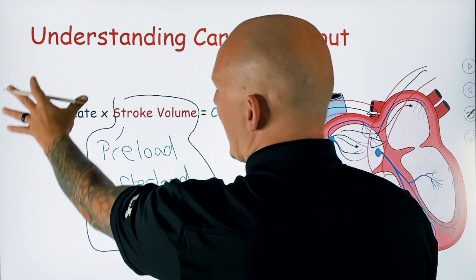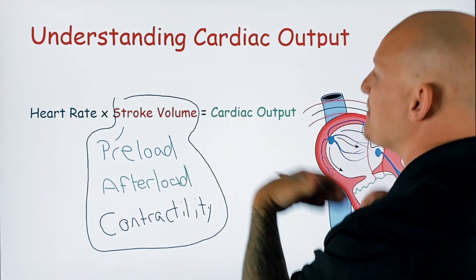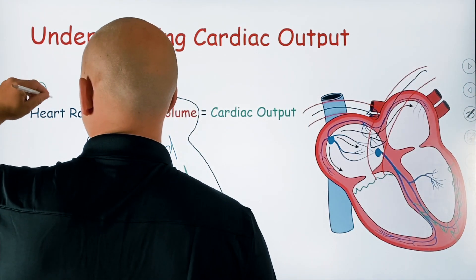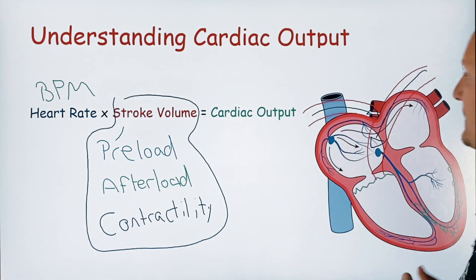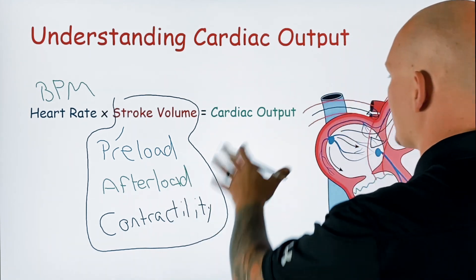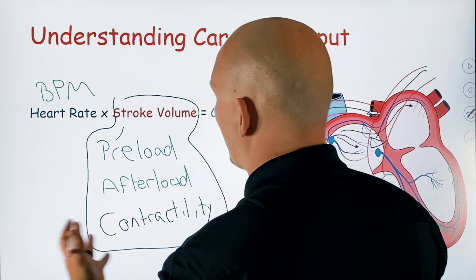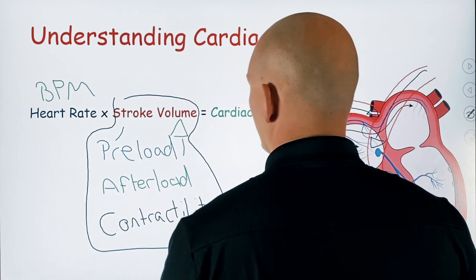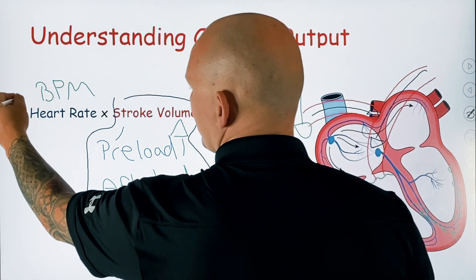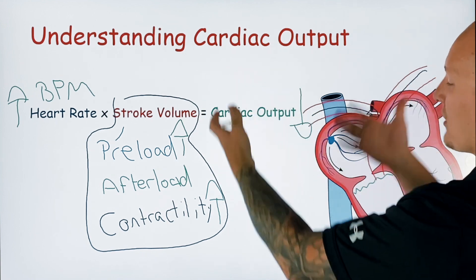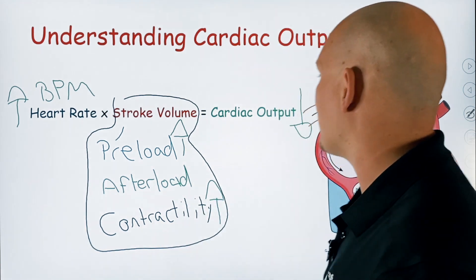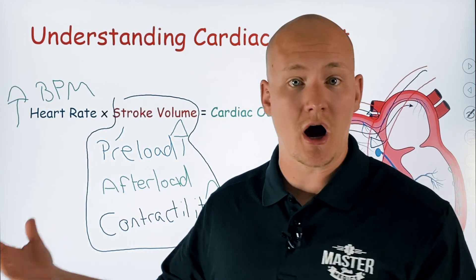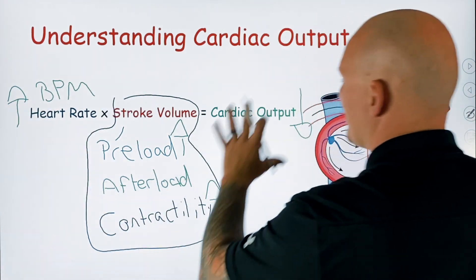Stroke volume times your heart rate gives you your cardiac output within a minute — beats per minute for heart rate. As cardiac output decreases, we're going to find compensating factors either through heart rate or stroke volume. We'll see increases in preload, increases in contractility, and increases in heart rate in order to compensate for decreases in cardiac output. It's a moving system, because decreased cardiac output is going to lead to hypoperfusion, decreases in blood pressure, and ultimately shock. That is why we see these compensating factors when we have a decrease in cardiac output.